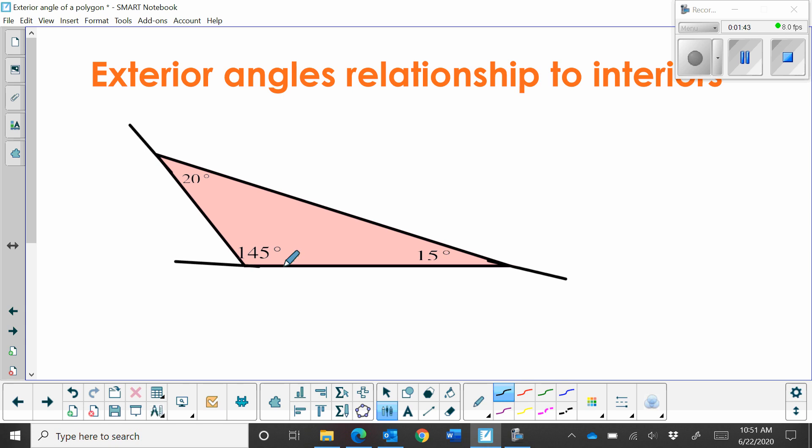It has three different angles on its interior: 20, 15, and 145. Notice the sum adds up to 180 degrees, because that's the sum of the angles in a triangle.